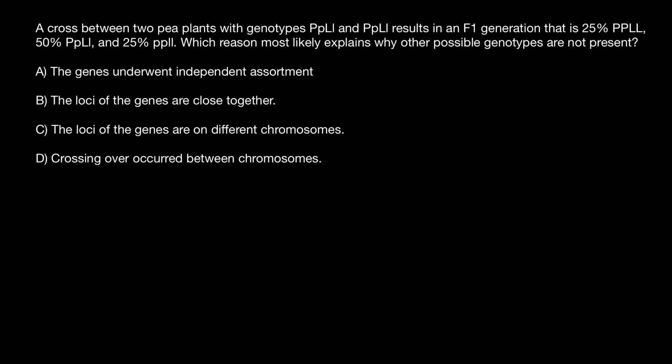Instead of these letters, I'm going to use A and B, because P looks similar especially if we use them in a vertical position — capital P and small p would look similar. So instead of P and L genes, I'm going to use A and B. You don't necessarily have to use the same letters to solve a problem; you can change letters to whatever would be easier.